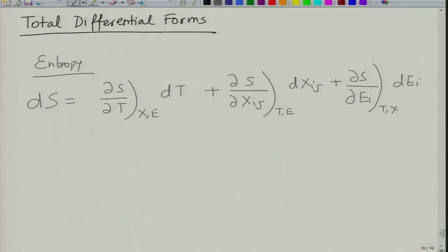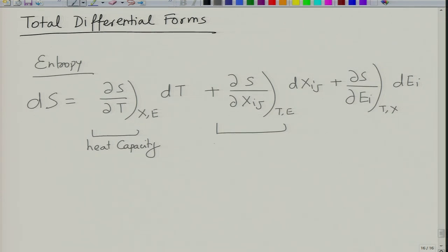Now, what is the term (∂S/∂T)? That is heat capacity C. What is (∂S/∂X)? This is the change in entropy upon change in stress — this is called the piezocaloric effect. And what is (∂S/∂E)? This is the change in entropy upon change in electric field — this is called the electrocaloric effect.